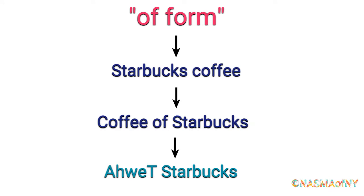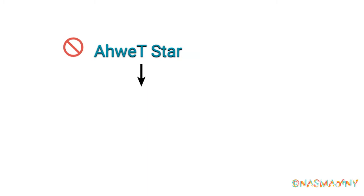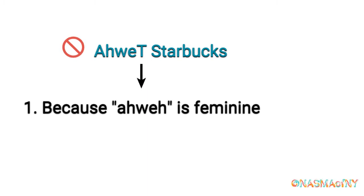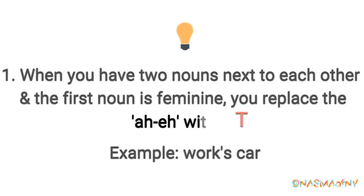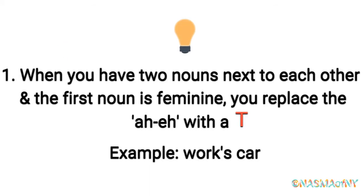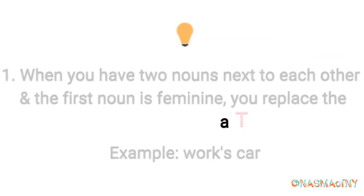You might be wondering: why did I pronounce the T in Ahwe? What happened to the A-H? Simply because my first noun, which is Ahwe, is feminine. When you have two nouns next to each other and the first noun is feminine, you replace the A-H or E-H with a T.